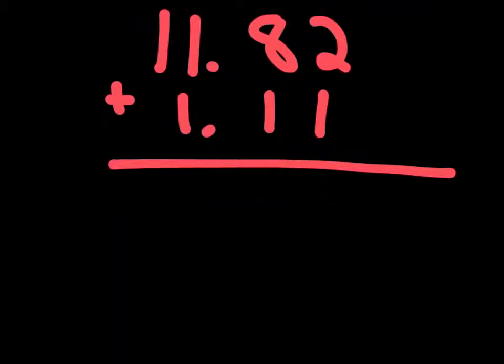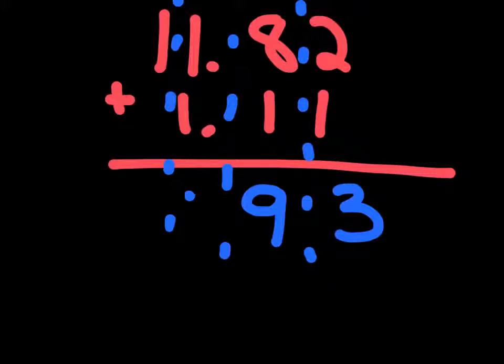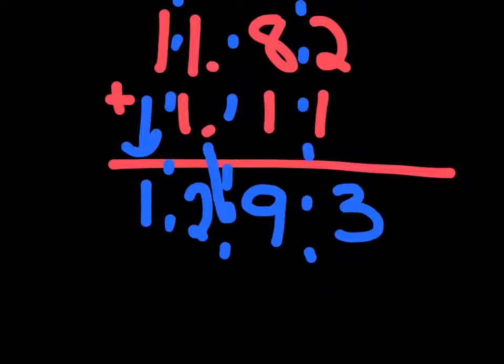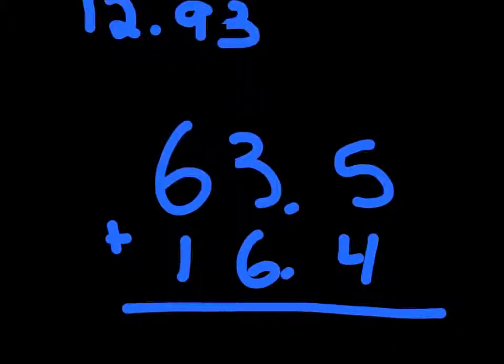So, the first question is 11.82 plus 1.11. Well, we know we can break these up into columns. And we know that 2 plus 1 is just 3. 8 plus 1 is 9. 1 plus 1 is 2. And we bring down this one because it's not being added with anything. And then we bring down the decimal point. So, we know that our answer comes out to be 12.93. That's it for this question.